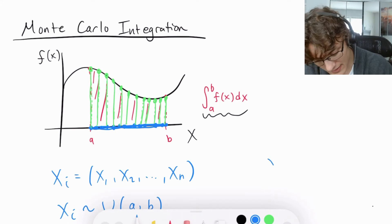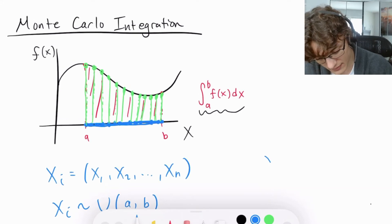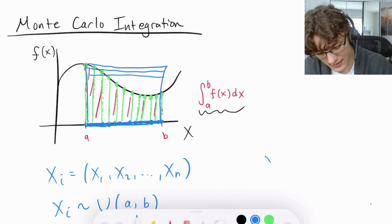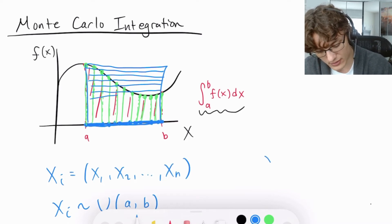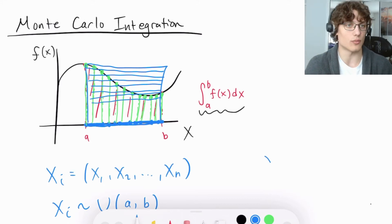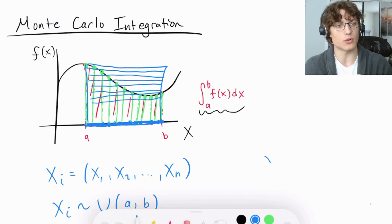So what we end up with is this fixed width of a rectangle here and a height that changes based on the function's value. So we're ending up with a series of rectangles, as you can see here, for each of the points that we've evaluated from our random sample that was uniformly distributed from a to b.